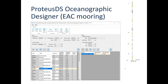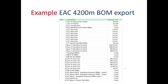The designer is the program used to click together components in the design. This is an example showing the EAC mooring at 4,200 meters water depth. The main design window lists lines and assemblies. In the sub-assembly window on the right-hand side, you can add attachments to things like subsurface floats and instruments. You'll notice a lot of aggregate information like total mooring length, scope, and weights of the assemblies.